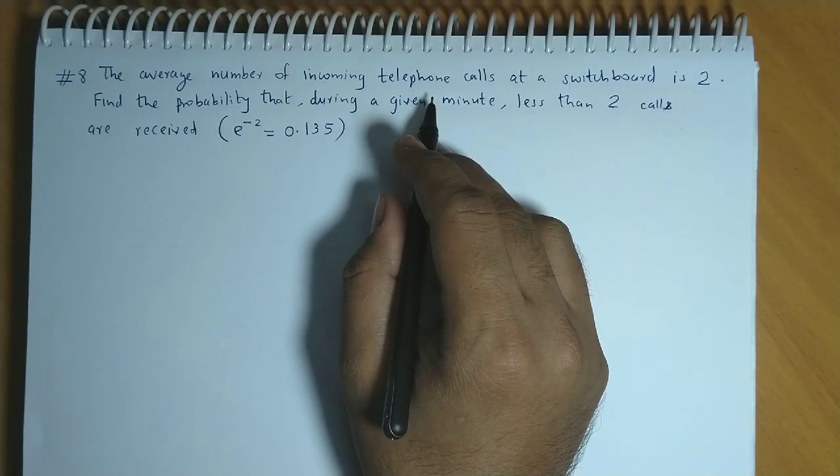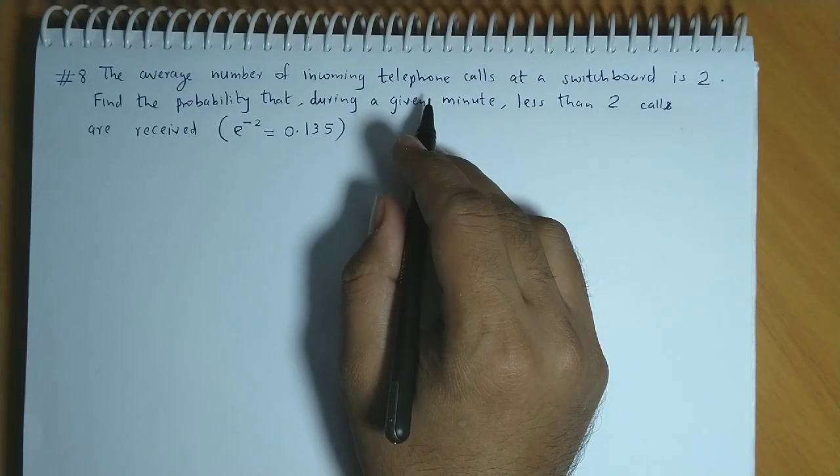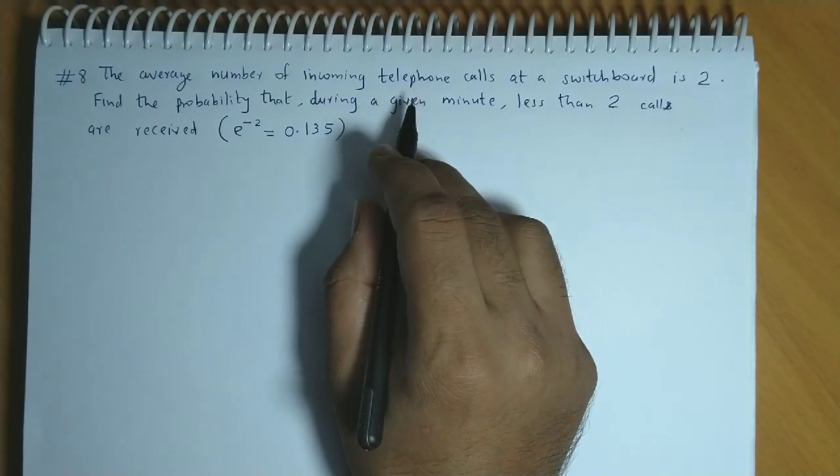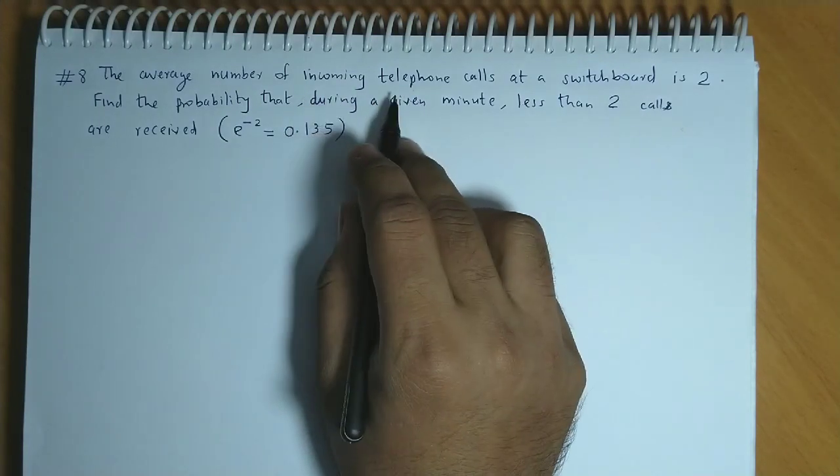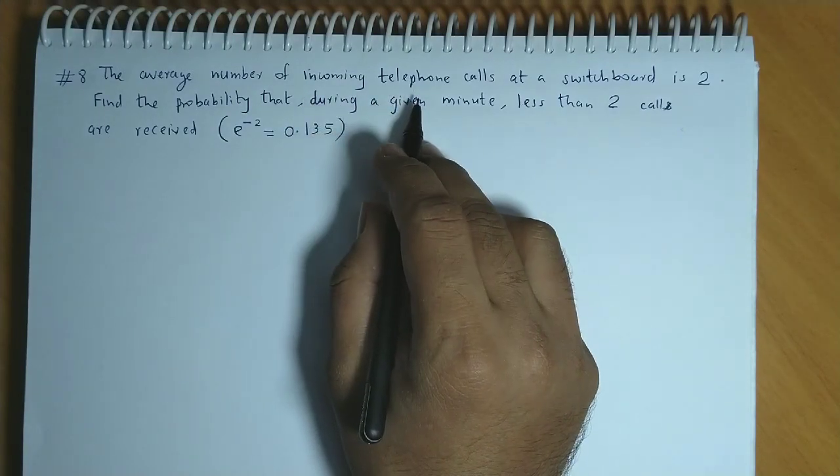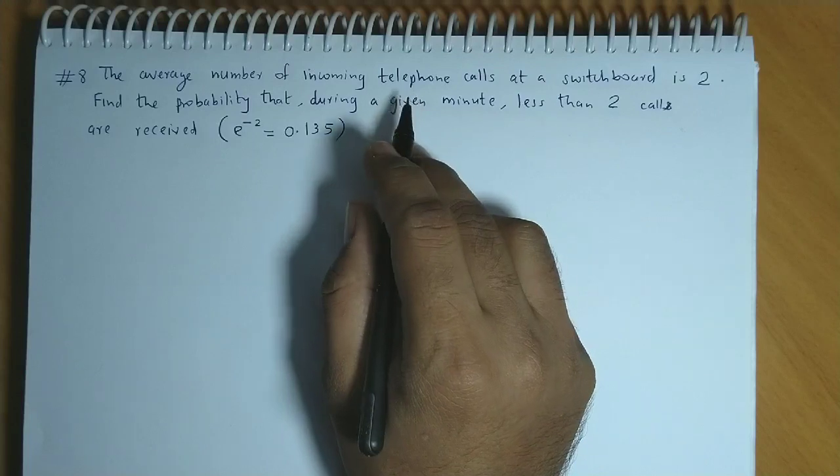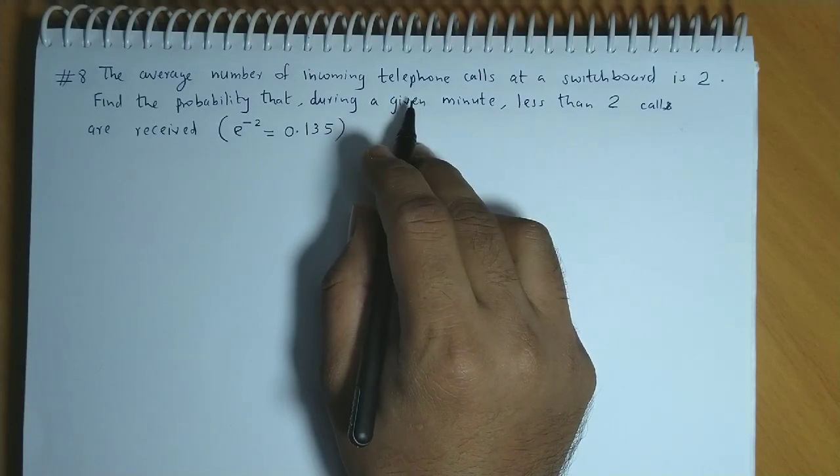Because this is not a finite number of trials, this can exceed into large numbers. This is why Poisson distribution is applicable here. And since number of telephone calls is a discrete variable, this indicates Poisson distribution.